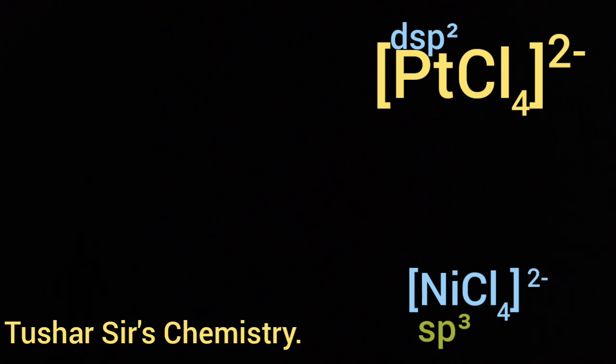In case of NiCl₄²⁻, Cl⁻ is a weak ligand and Ni is a lighter d-block element, or it is present in the first transition series.